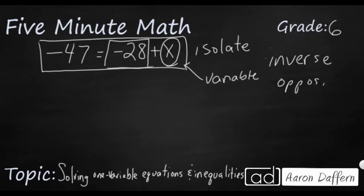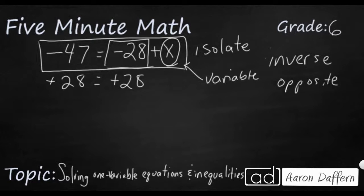We have a negative 28 sticking on the same side of the equation as this variable, so we need to get rid of it. The inverse, or opposite, of negative 28 is going to be positive 28, or adding 28. So we are going to use the addition property of equality, which says you can add the same amount to both sides of an equation and it will remain equal or balanced. This negative 28 plus 28 will cancel out, and we'll get just x over here.